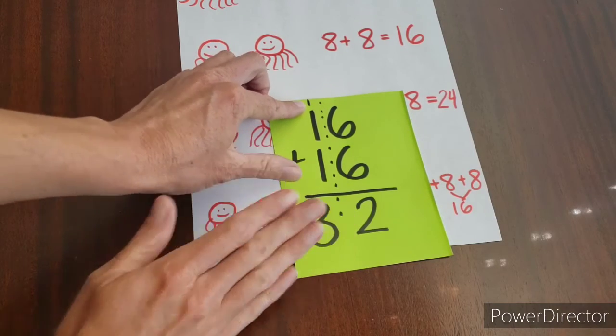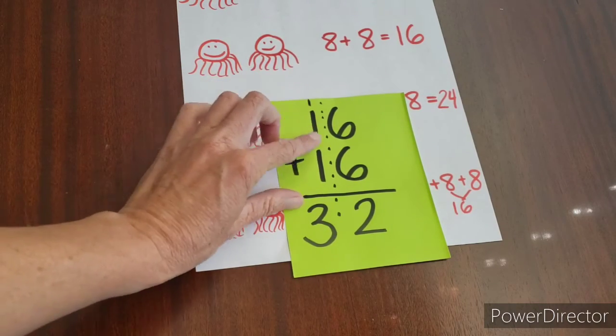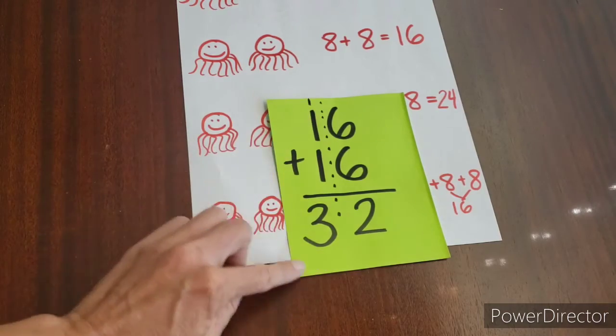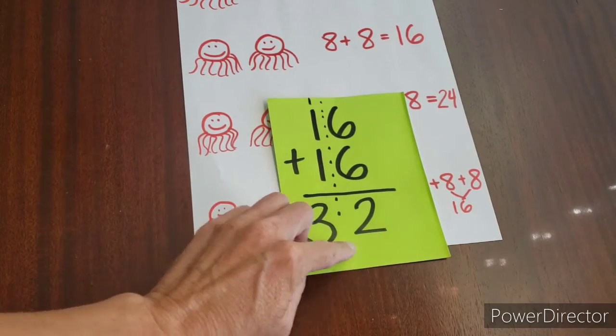So see how we drew a little one? Now you're going to say one plus one plus one is three. So it's 32.